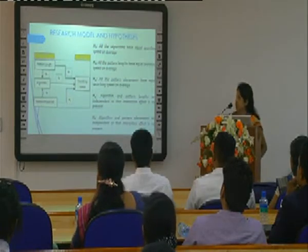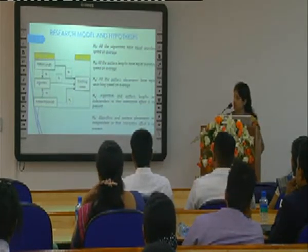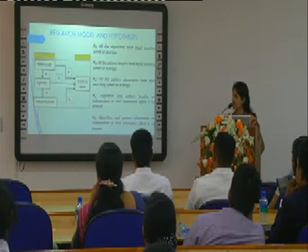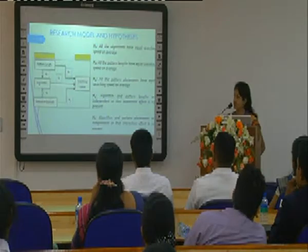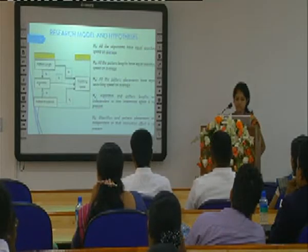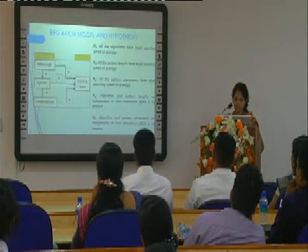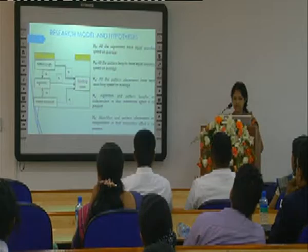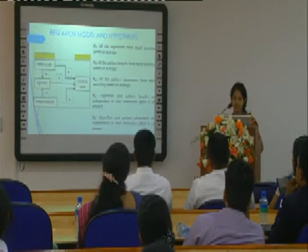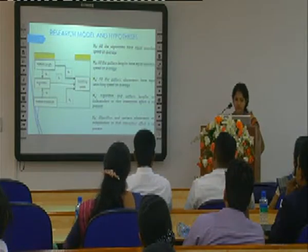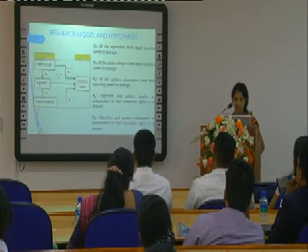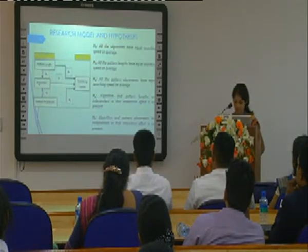The research model contains three independent variables and one dependent variable. The independent variables are pattern length, algorithm, and pattern placement position. The dependent variable is the searching speed. There are five basic hypotheses. The first three hypotheses test the dependence between pattern length, algorithm, and pattern placement with searching speed. The additional two hypotheses test the interaction between pattern length and algorithm, and between pattern placement position and algorithm.